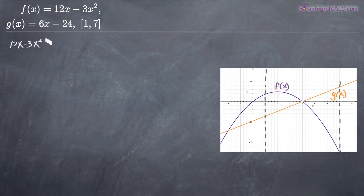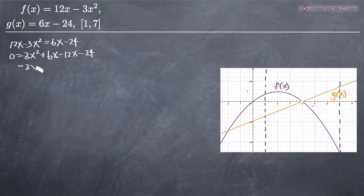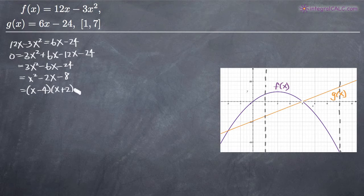The way we find the intersection is by setting the functions equal to each other: 12x − 3x² = 6x − 24. Moving everything to the right side gives us 3x² + 6x − 12x − 24, which simplifies to 3x² − 6x − 24. Dividing by 3 gives x² − 2x − 8, which factors to (x − 4)(x + 2), so x = 4 and x = −2 are where the graphs cross each other.